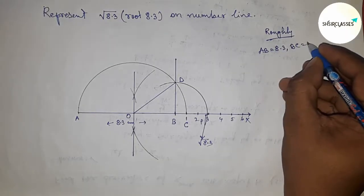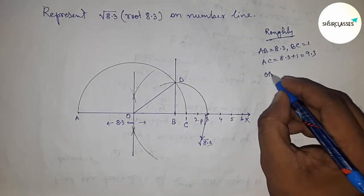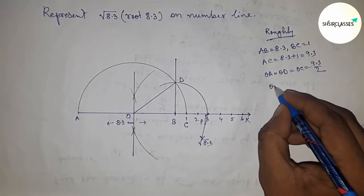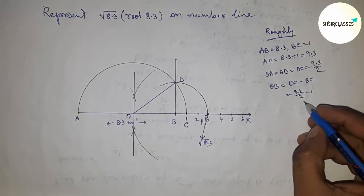So AC = 8.3 + 1 = 9.3. OB, OD, and OC = 9.3/2. OB = OC - BC, so putting the values of OC and BC: OB = 7.3/2.